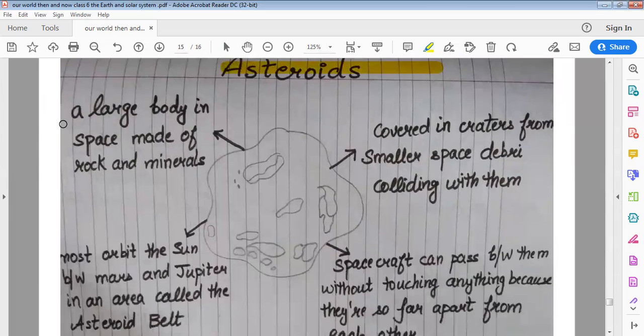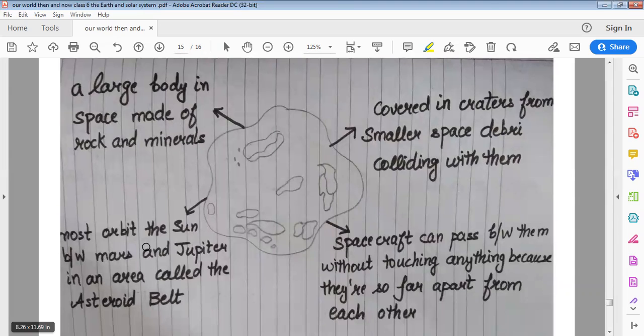Asteroids. A large body in space made of rocks and minerals. Most orbit the sun between Mars and Jupiter in an area called asteroid belt. Covered in craters from small space debris colliding with them. Spacecrafts can pass between them without touching anything because they are so far apart from each other.